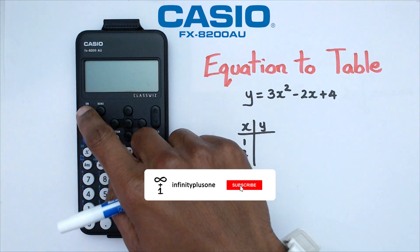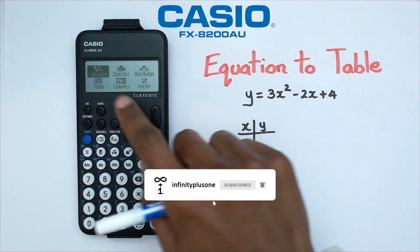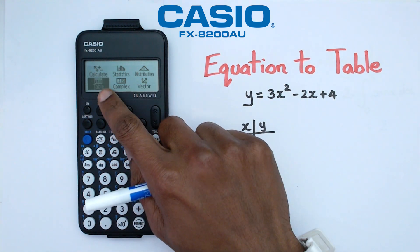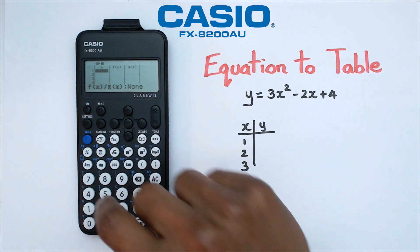Alright folks, so the first thing we want to be doing is switching on the calculator, click on the home button, and you should get to the main kind of menu here. We're going to go down to table and we're going to click exe.